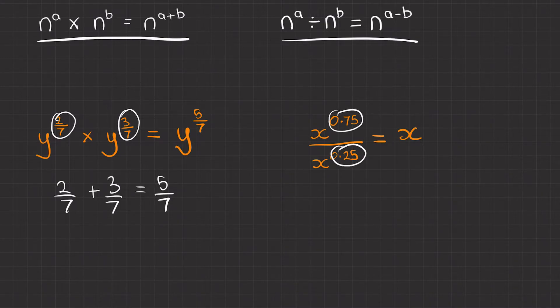We've got 0.75 take away 0.25, which equals 0.5. So our answer will be x to the power of 0.5.